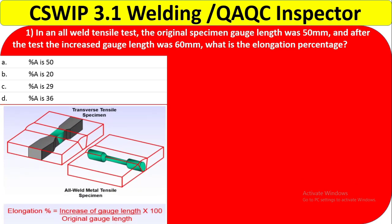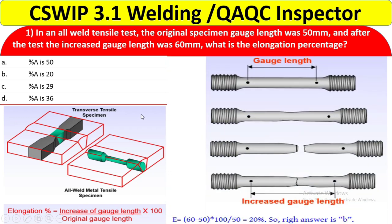You can see how the transverse tensile specimen and all-weld metal tensile specimen look, and from where you cut the specimen. This specimen is completely from the weld area only — that is called the all-weld metal tensile specimen. The formula is: elongation percentage = (increase of gauge length / original gauge length) × 100.